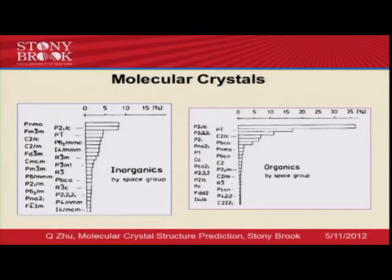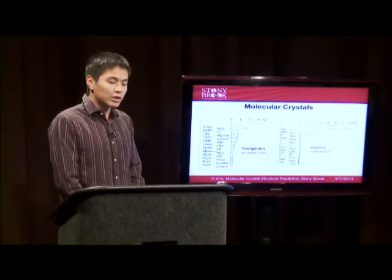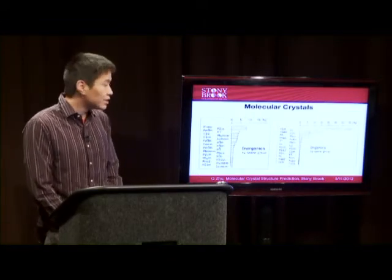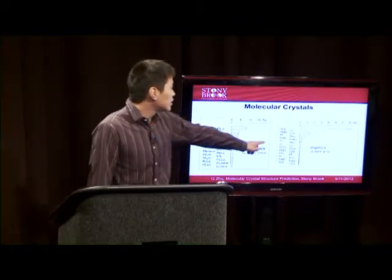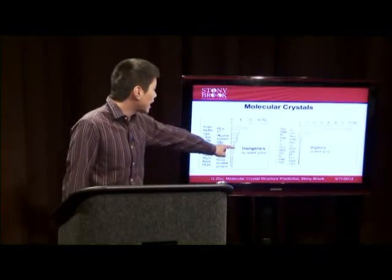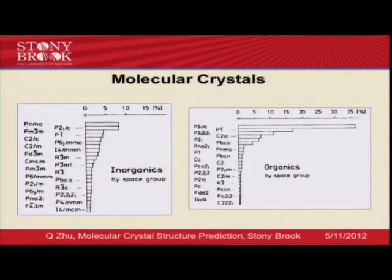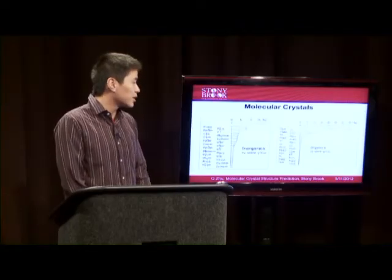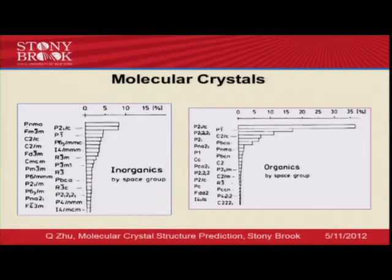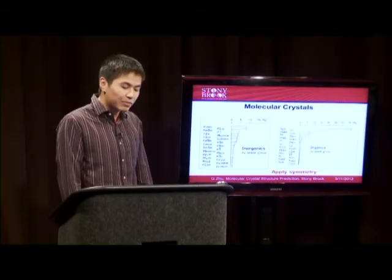Crystal structures can be categorized by symmetries, or more precisely in crystallographic language, space groups. Here is a comparison between inorganic crystals and organic crystals. It can be clearly seen that organic crystals tend to prefer some particular space groups compared to inorganic crystals. This indicates that when doing structural search for molecular crystals, we don't have to go through all possible configurational space — we can focus on the configuration space with those preferred space groups. Here we have recipe number one: we can apply symmetry to solve this problem.